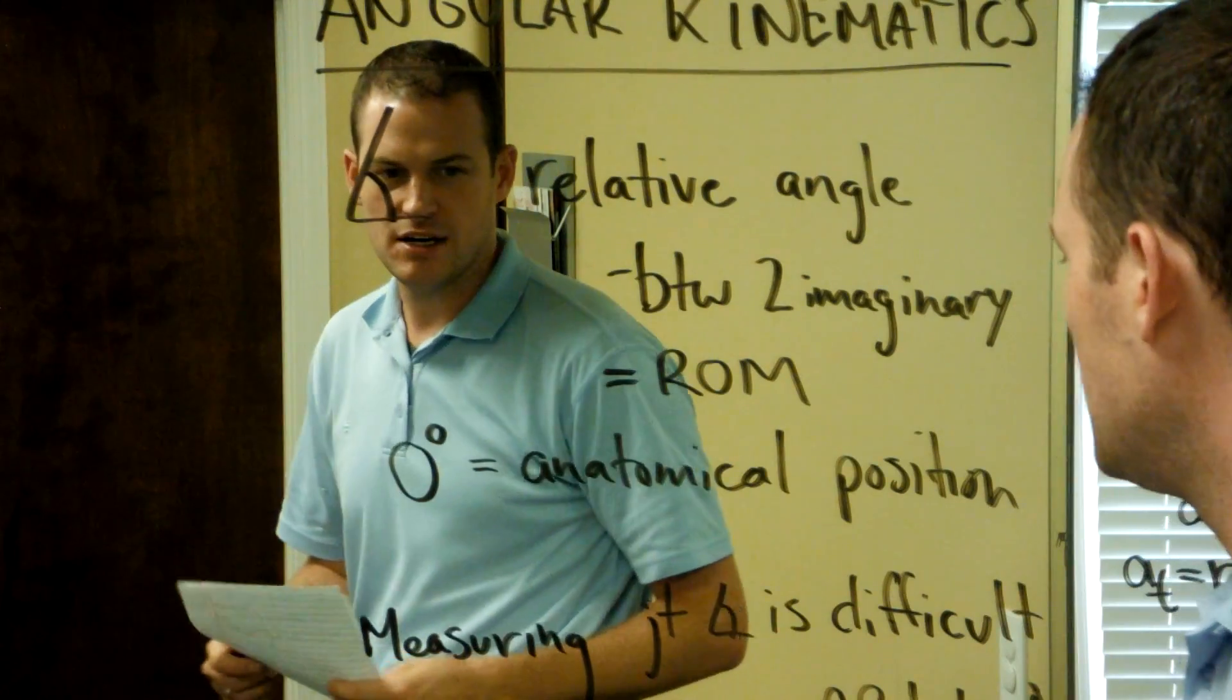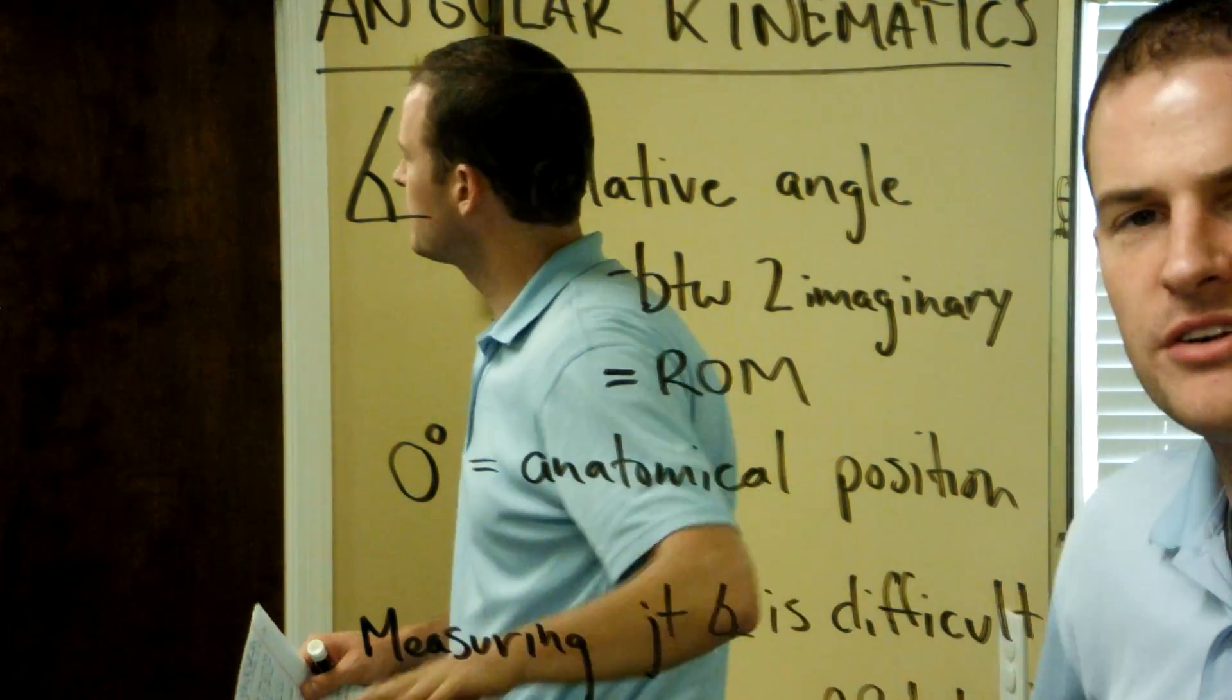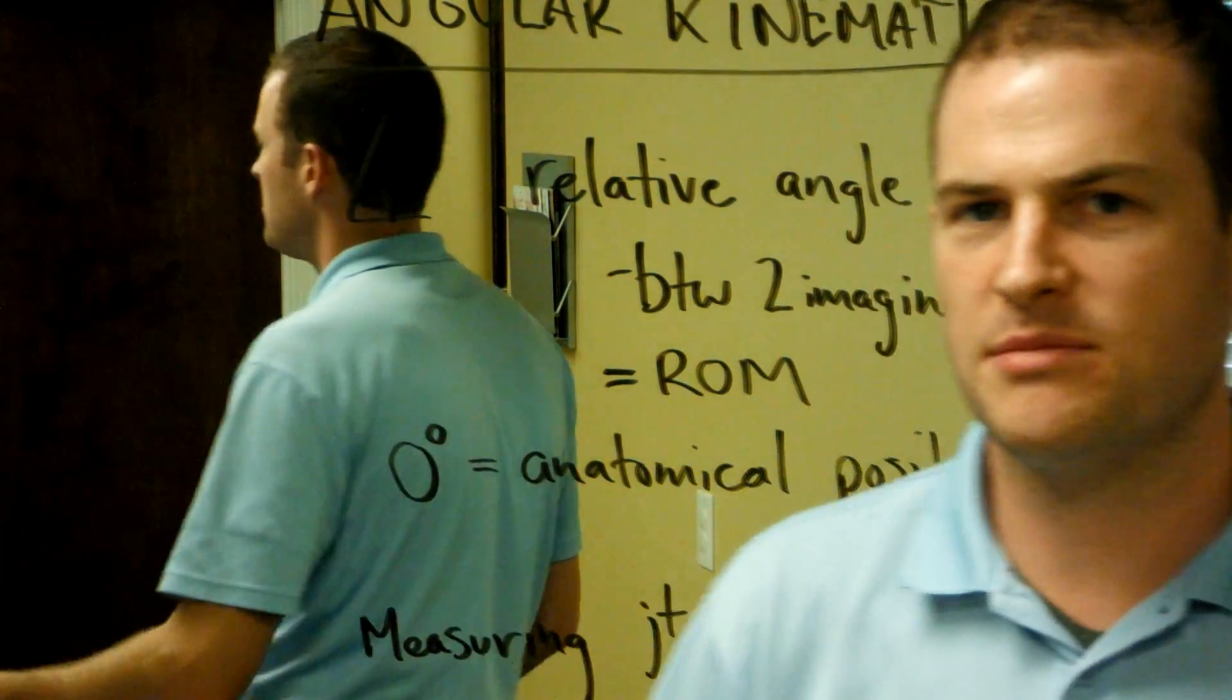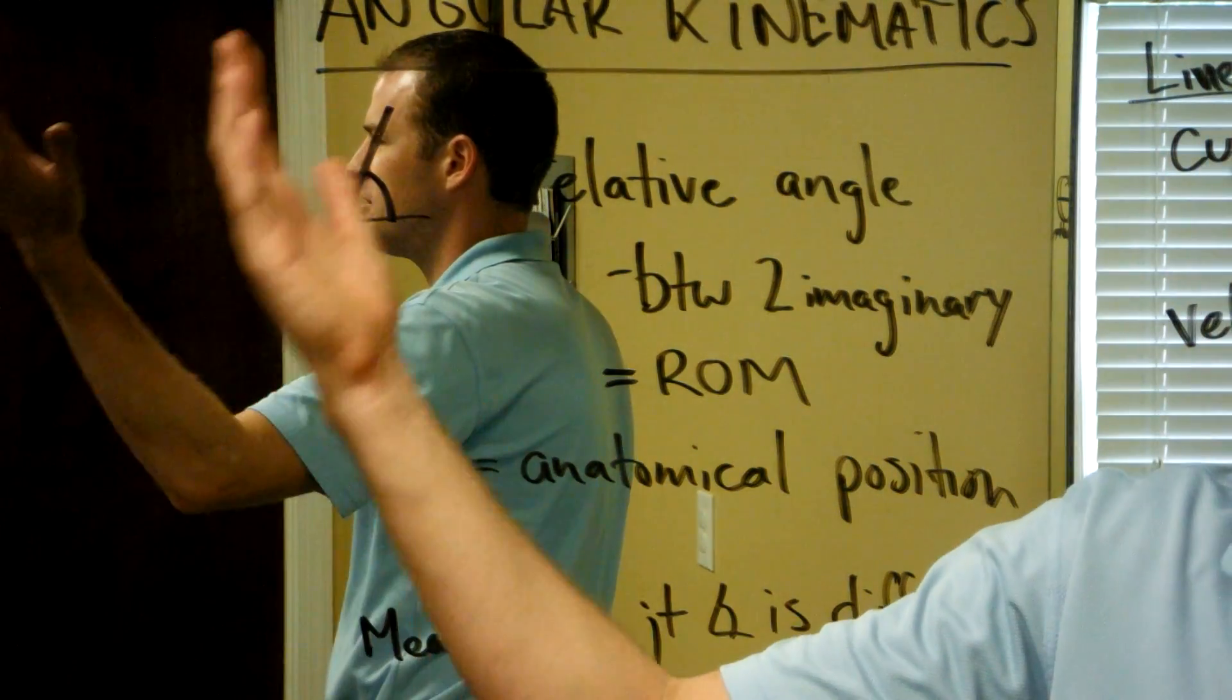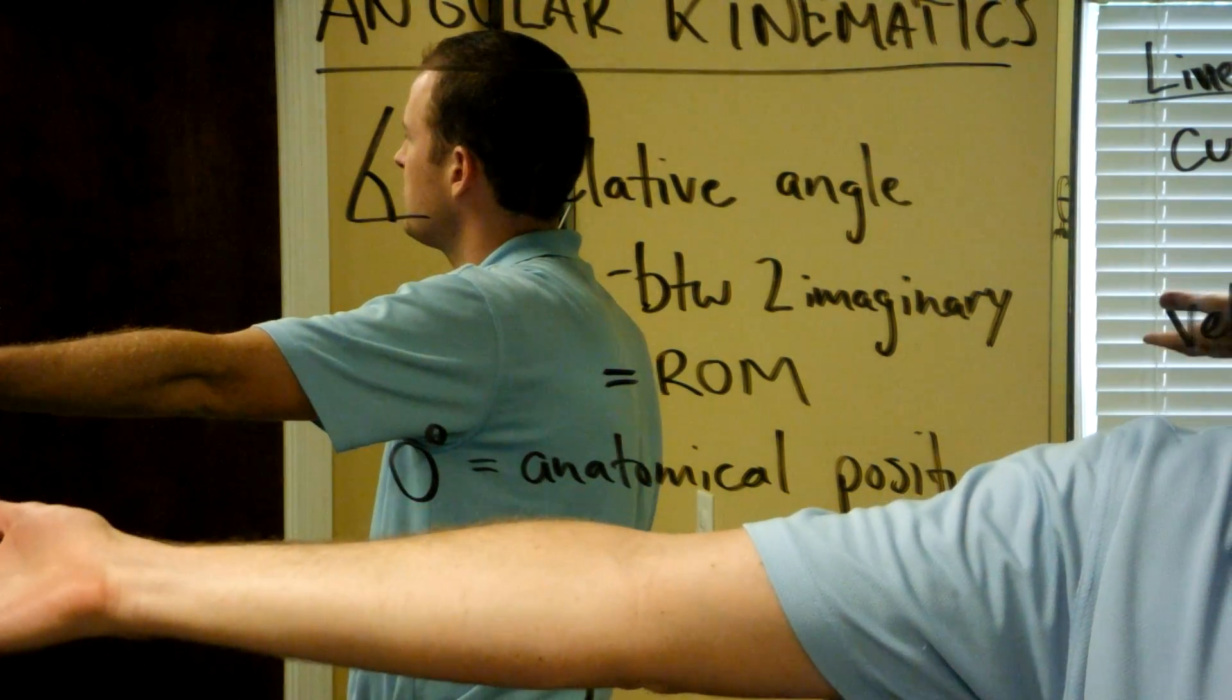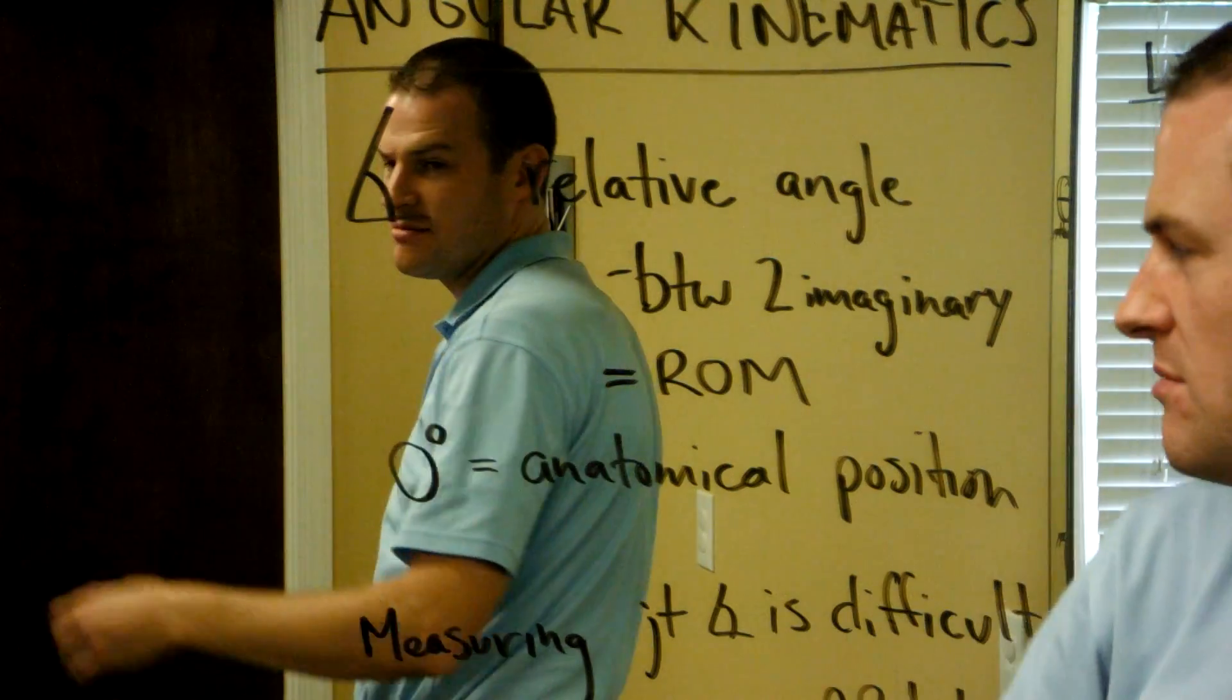Zero degrees is measured from anatomical position. So if we describe the elbow as in 90 degrees of flexion, we are simply saying it has gone 90 degrees from the anatomical position of neutral. That is true for all joints of the body.